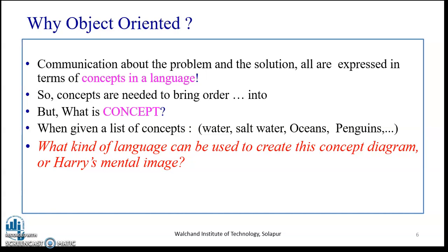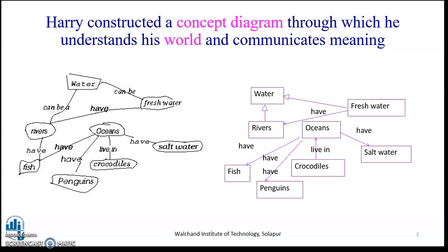Communication about a problem and its solution are expressed in terms of concepts in a language, so concepts are needed to bring order. When given a list of concepts like water, salt, ocean, penguins, and crocodiles, what kind of language can be used to create a concept diagram? Consider these elements — water, salt, ocean, and penguins — and what kind of diagram one would use to describe them.